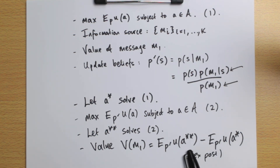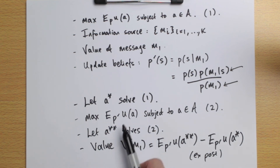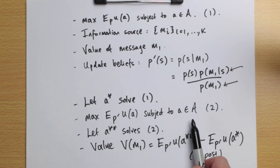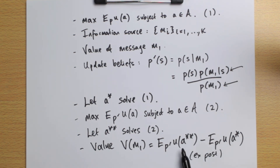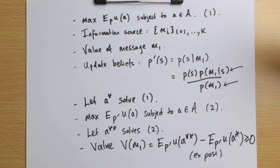It only has value because it's made the decision-maker change their mind. Notice that a** is optimal — it solves the problem of maximizing expected utility. So if a** equals a*, the value is obviously zero. Otherwise, a** must have higher expected utility. We can conclude that the value of a message must be non-negative. You would only change your mind because it gives you increased utility, and that increased utility from changing the action you take is precisely why the message has value.